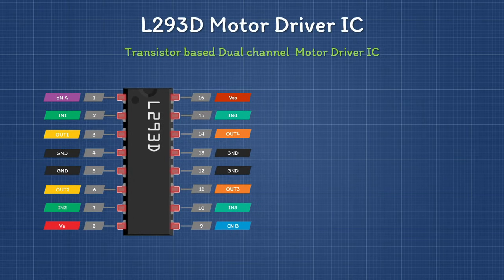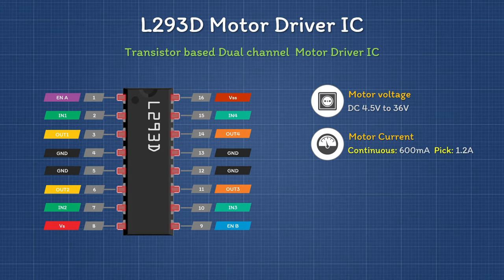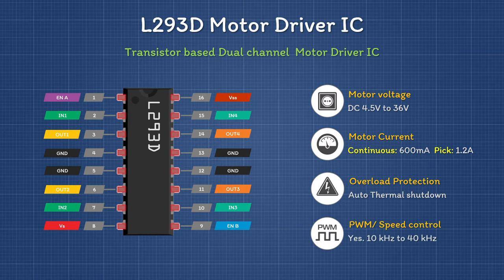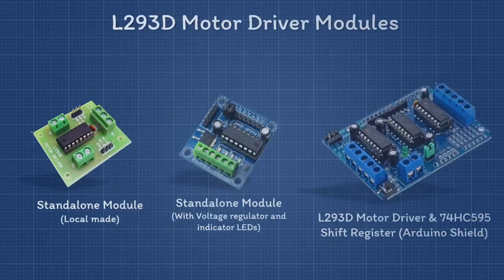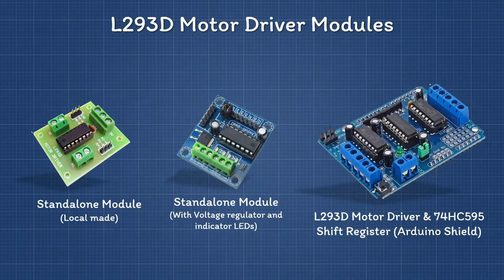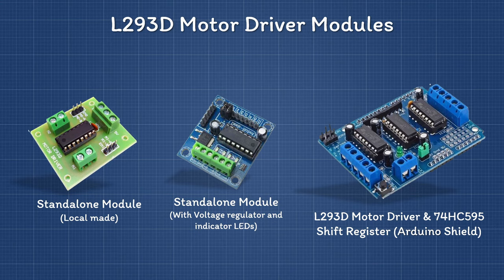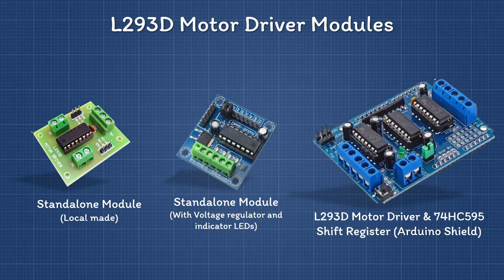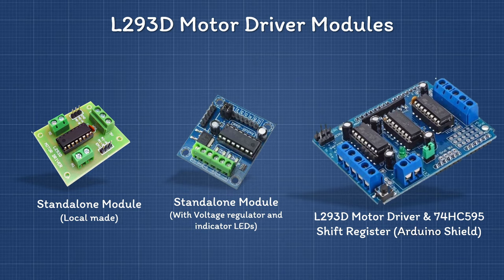Key specifications of the L293D: motor voltage range is 4.5 volts to 36 volts; motor current is 600 milliamps continuously and 1.2 amps at peak. It has a built-in auto thermal shutdown for protection and supports PWM signals to control motor speed. This IC is available in various easy-to-use module forms, including normal standalone modules, advanced standalone modules with voltage regulator and indicator LEDs, and as an Arduino shield with multiple L293D ICs and shift registers.